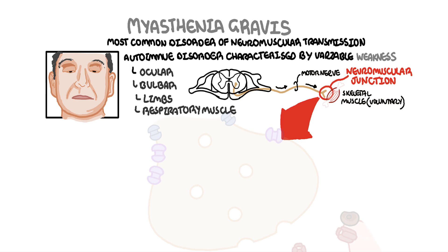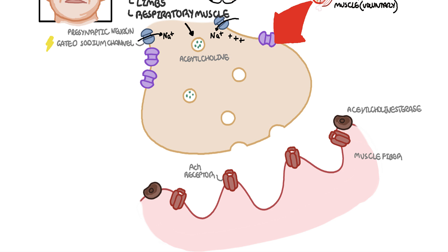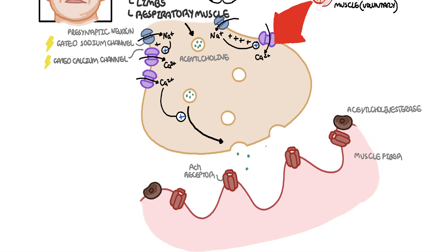The end of the motor nerve is the terminal bulb, which houses vesicles containing acetylcholine (ACh). Normally, when an action potential arrives at the terminal, the influx of sodium ions through voltage-gated sodium channels causes depolarization and opens voltage-gated calcium channels. Calcium influx triggers the release of acetylcholine into the neuromuscular junction. Acetylcholine is a neurotransmitter which binds onto acetylcholine receptors on the muscle fibers, causing an influx of sodium ions into the muscle which eventually causes muscle contraction.